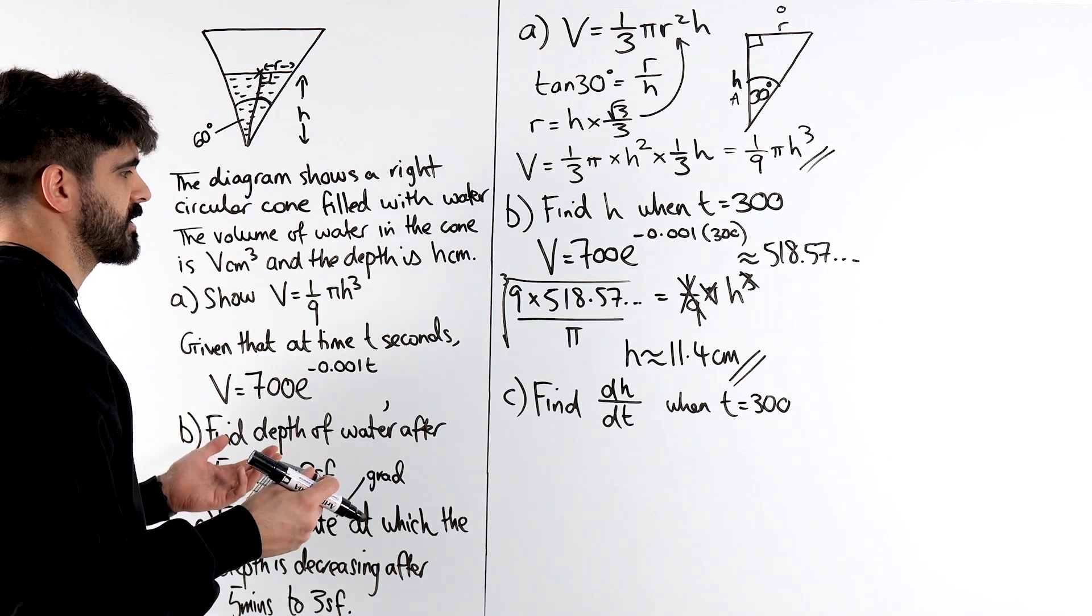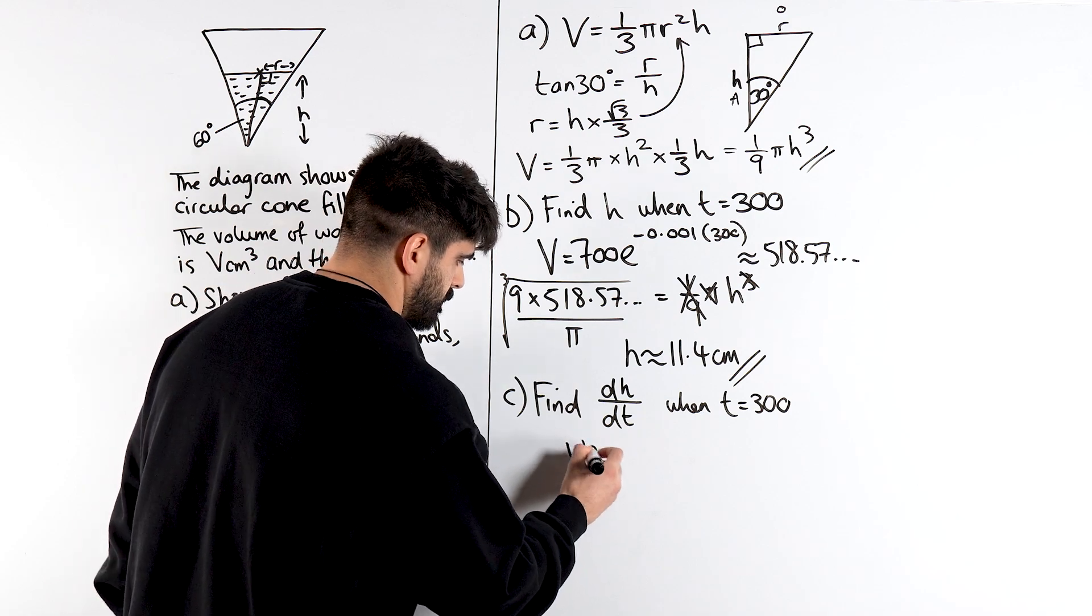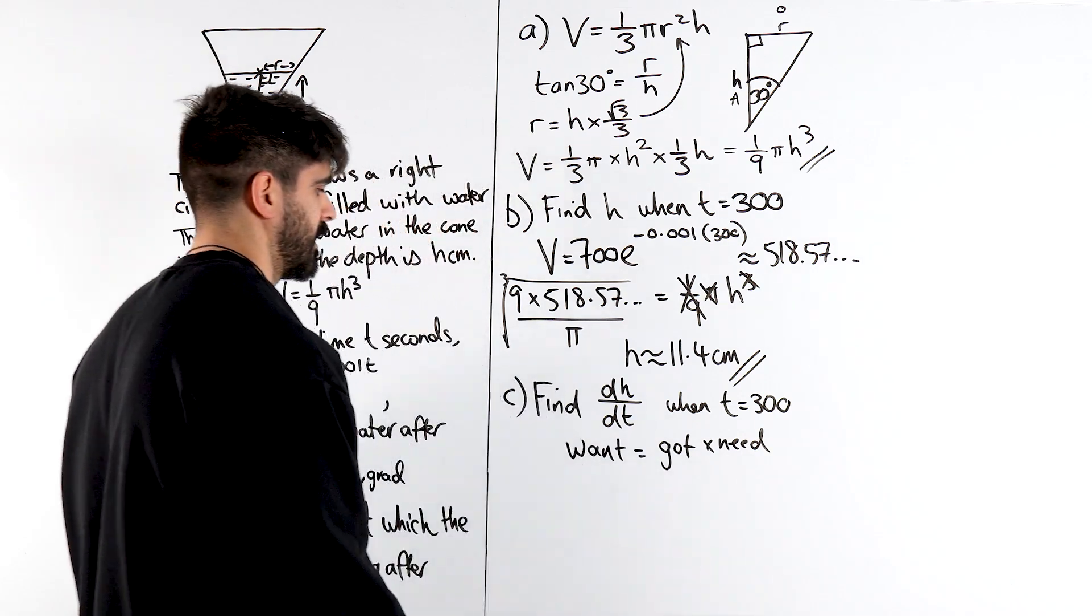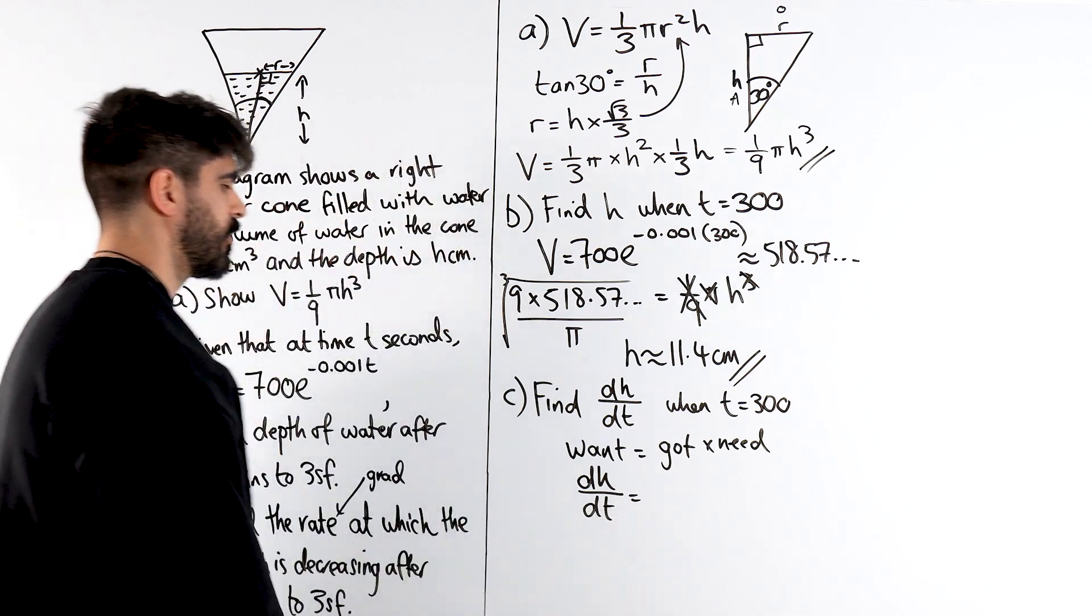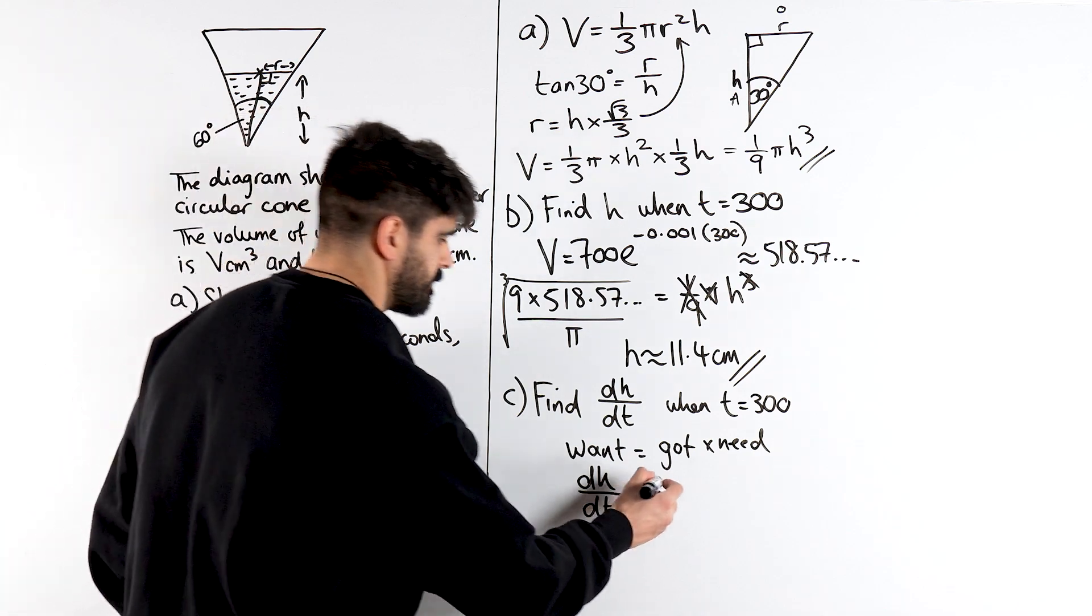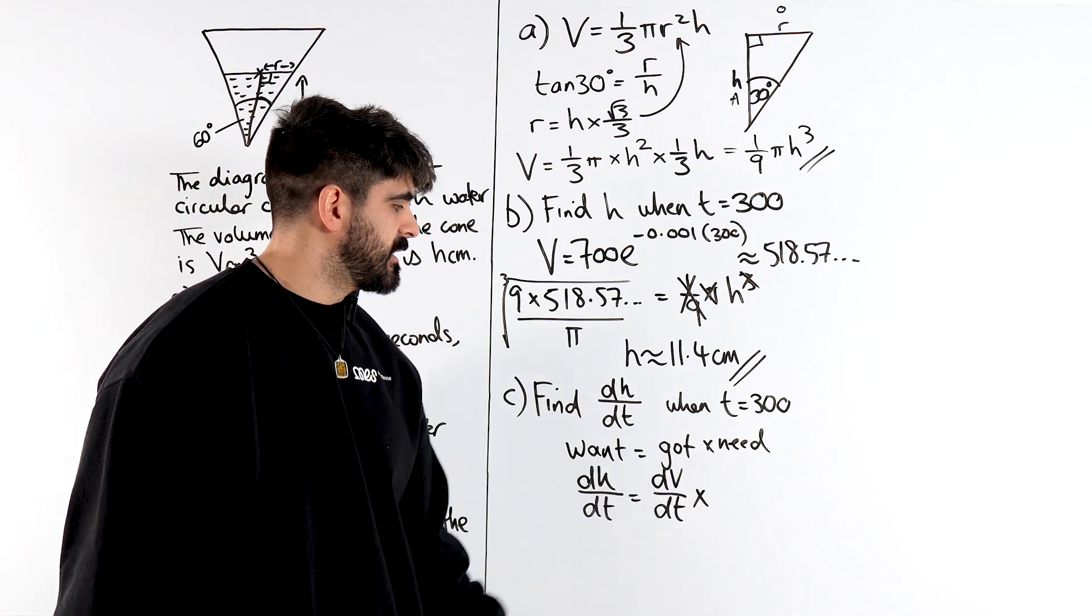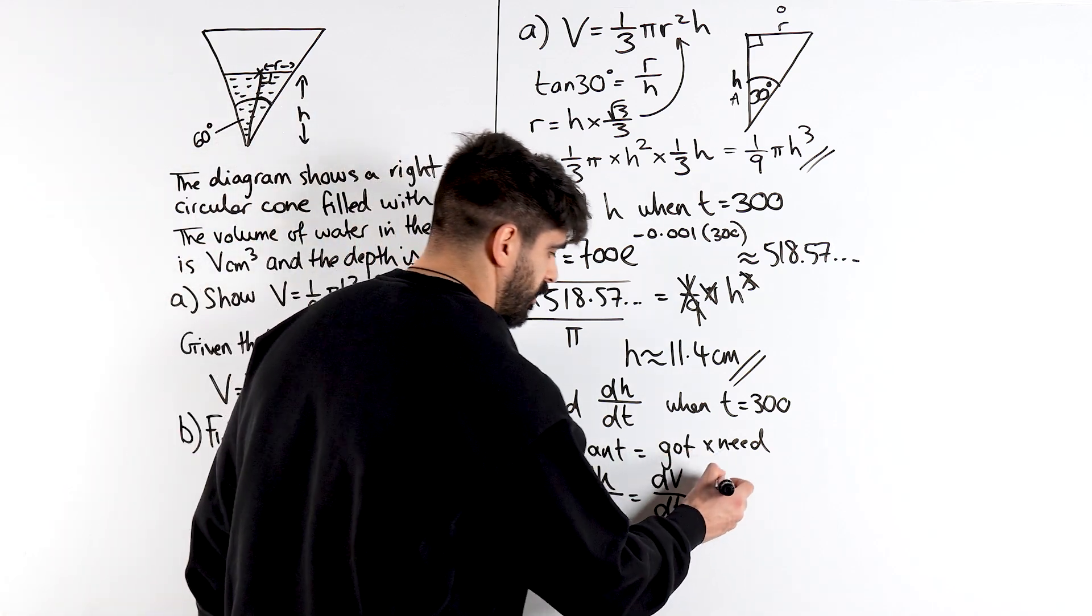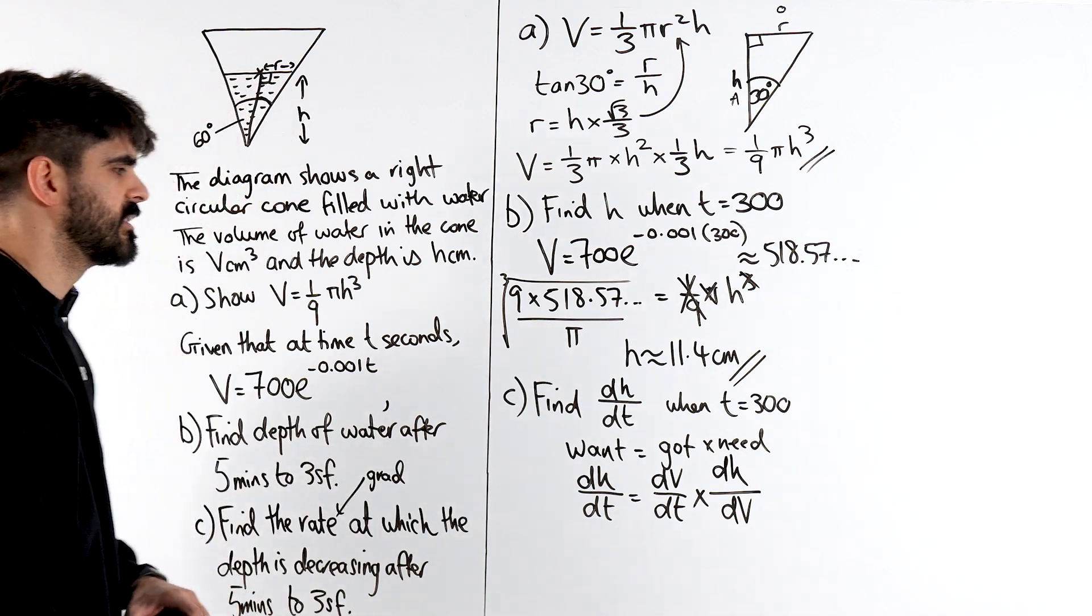Okay. Now, this is a classic, what I call, what got need. My Wagwan formula. So, what do they want? Is equal to what we've got times what do we need. Now, we want dH by dT. What have we got though? Well, we have a relationship between the volume and time. So, we can easily get dV by dT. Well, what do we need to multiply dV by dT by to get dH dT? Well, we need a dH on the top. And we need to divide by dV. And we can get all of these things really easily.